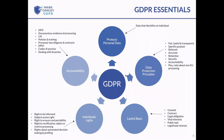GDPR introduced a new principle called the accountability principle, which says it's not good enough that you think you're doing the right thing — you've actually got to prove it. There are various aspects of the accountability principle that crop up across the whole of GDPR. There are also rules about where data is processed — you're not supposed to process data outside the EEA without checks and balances in place.